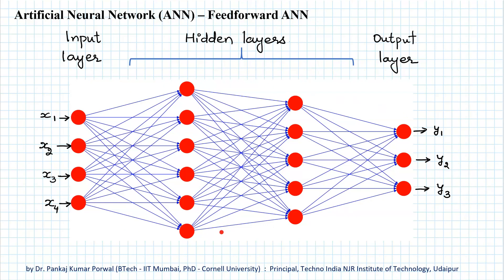How many layers there should be in an artificial neural network, how many nodes there should be in each of these layers, and what the weights of the links between nodes should be are all part of training the artificial neural network, and we will discuss them when we discuss training of artificial neural networks in later sessions.